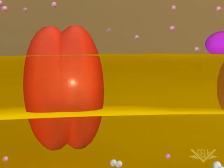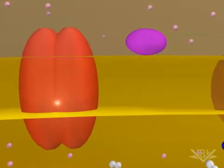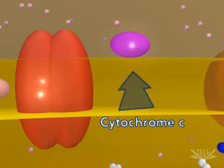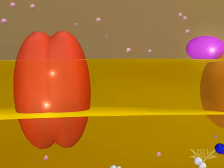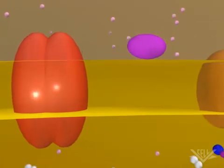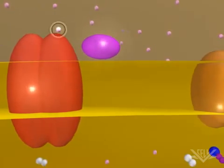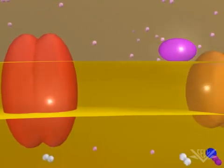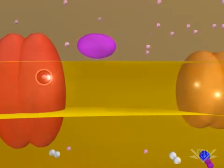Ubiquinone is called a mobile transfer molecule because it moves the electrons to the cytochrome BC1 complex. Each electron is then passed from the cytochrome BC1 complex to cytochrome C. Cytochrome C accepts each electron one at a time, and one hydrogen ion is pumped through the complex as each electron is transferred.